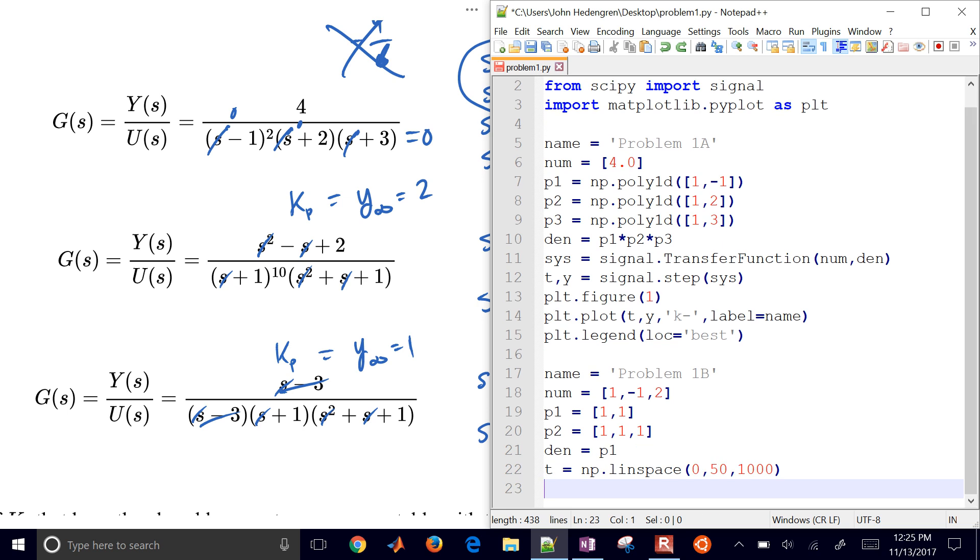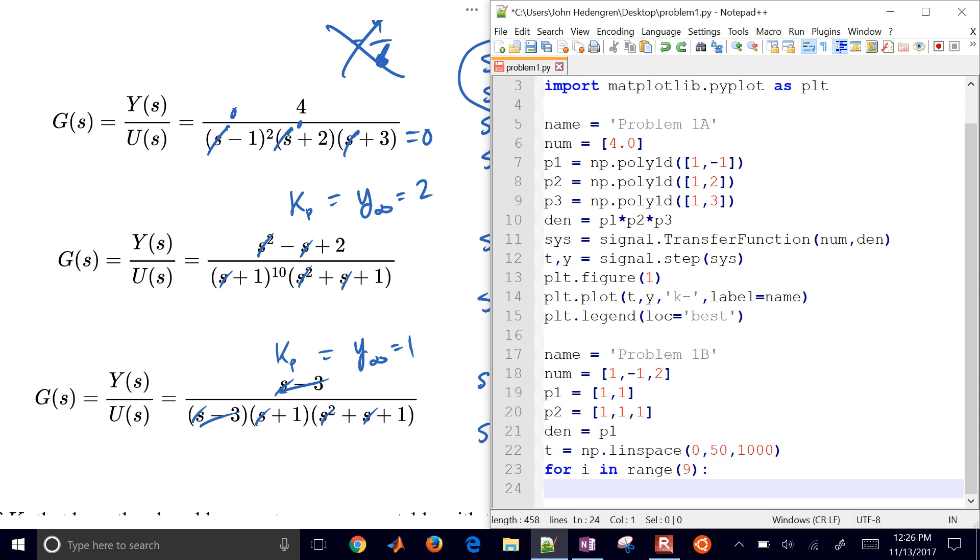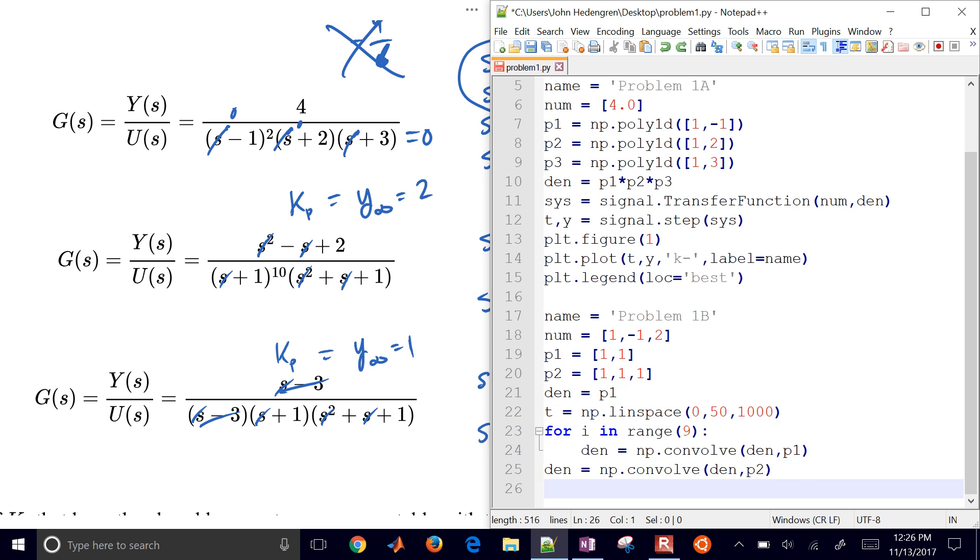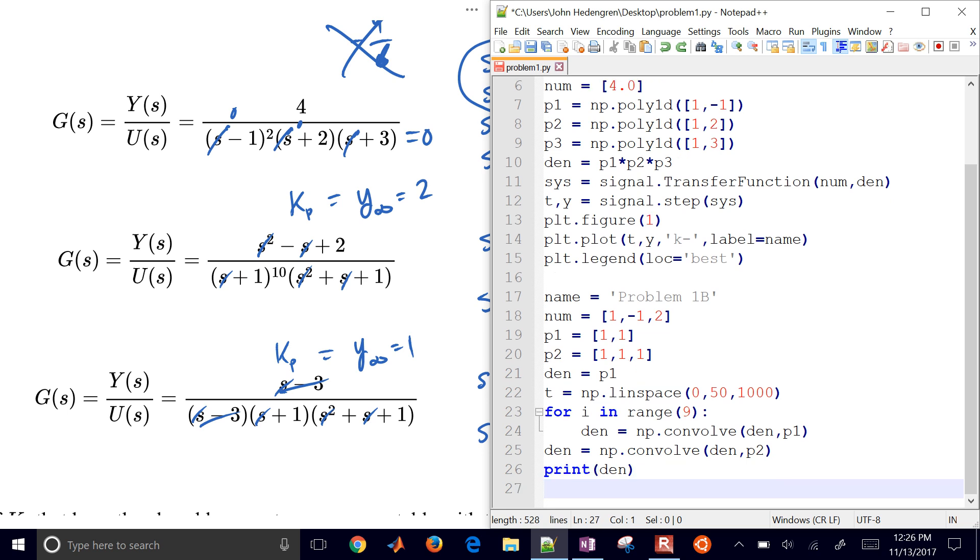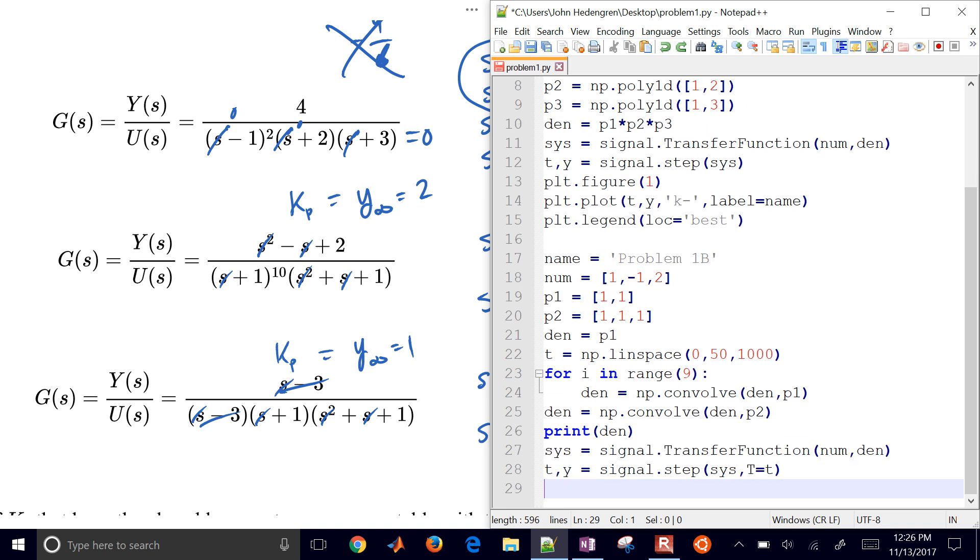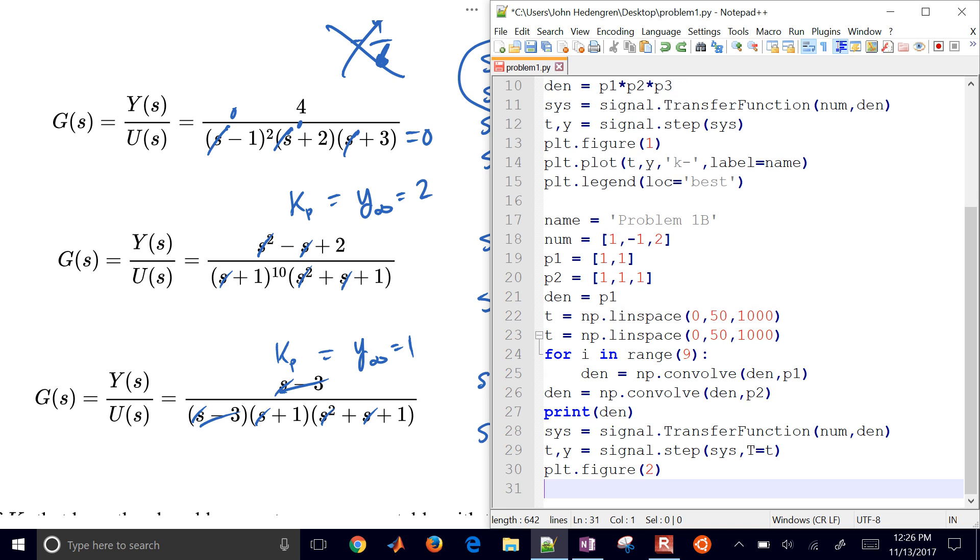And then there's my denominator. It's going to be p1, but I'll also put some time values I want in there. I'm going to multiply these together, and I'll have a denominator where I'm going to convolve the denominator with one more p1. And I'll do that nine more times. And then I'll have a denominator. I'll convolve that with p2. And then I'll just print my denominator, so my polynomial, and then create my transfer function, and generate the step, and then plot it.